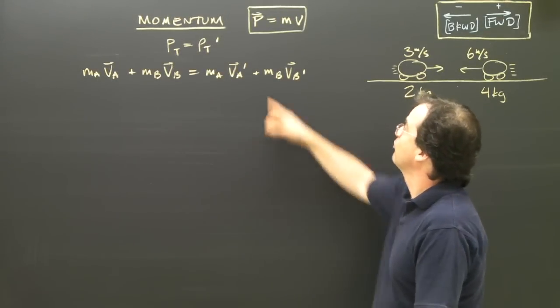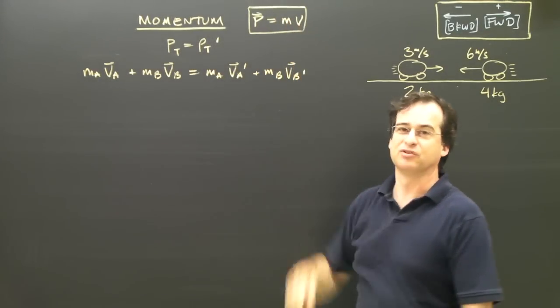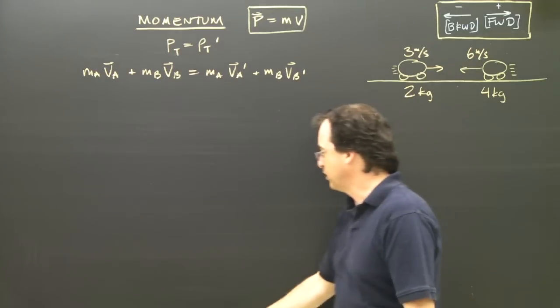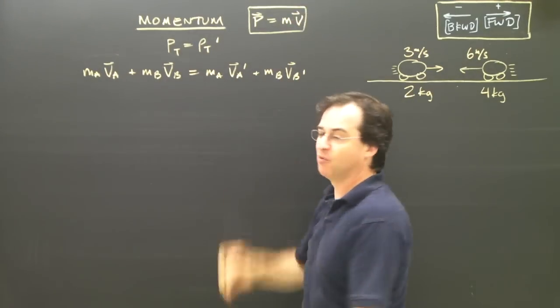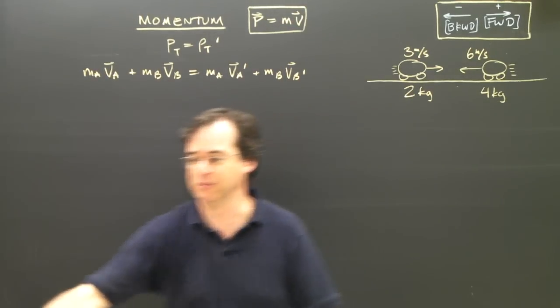Looking at momentum, we know that momentum is mass times velocity. So we have the formula for momentum, and what we want to look at is conservation of momentum.